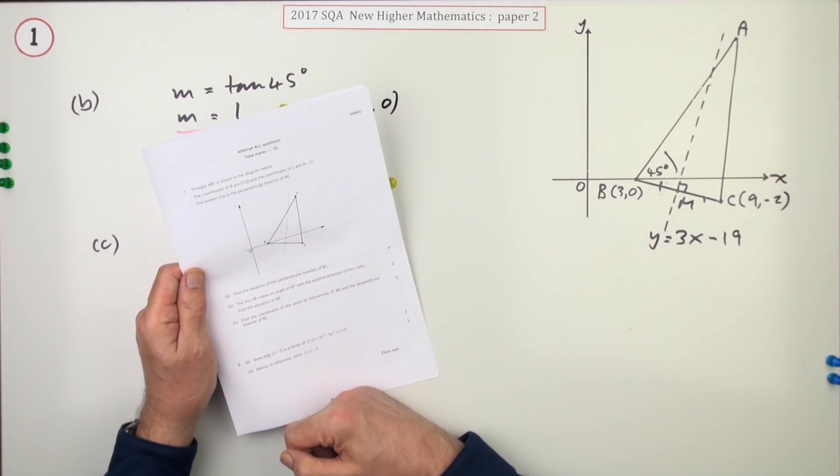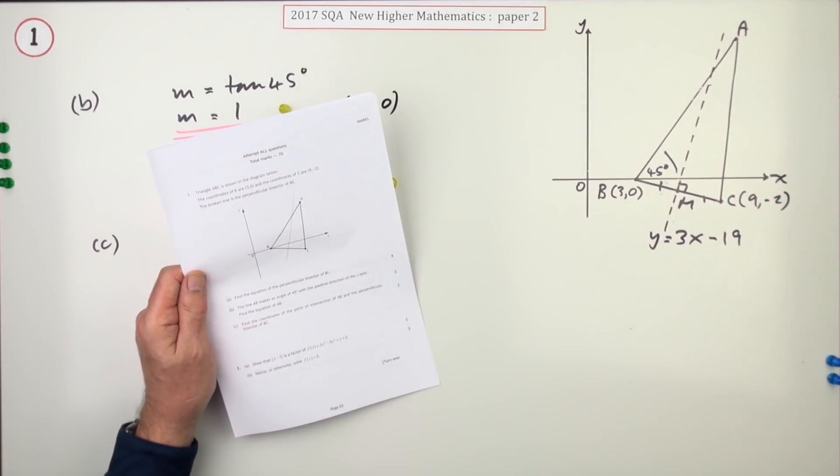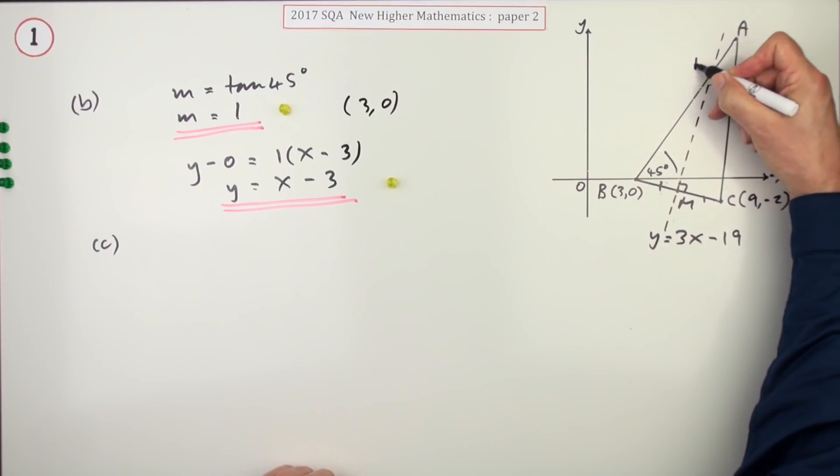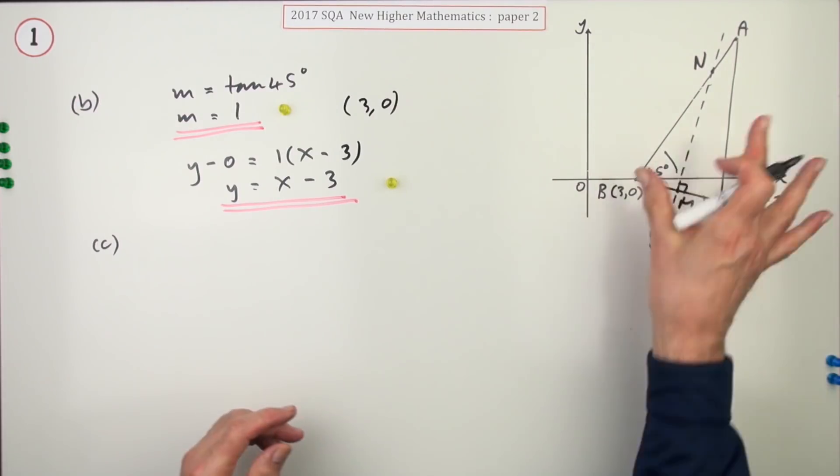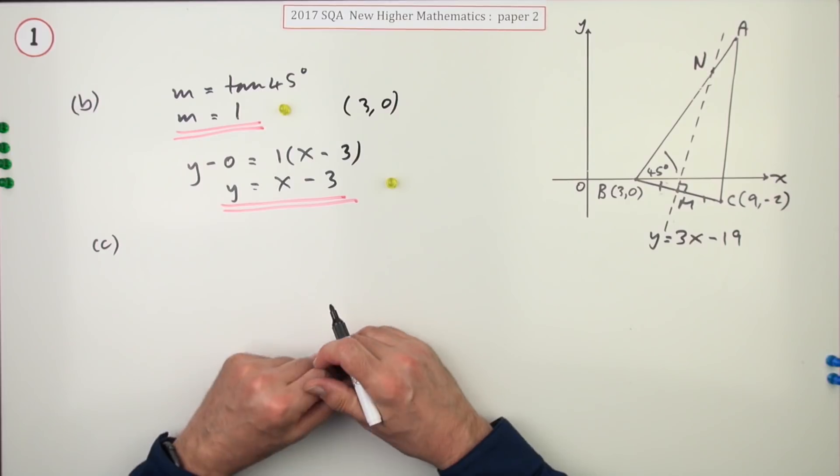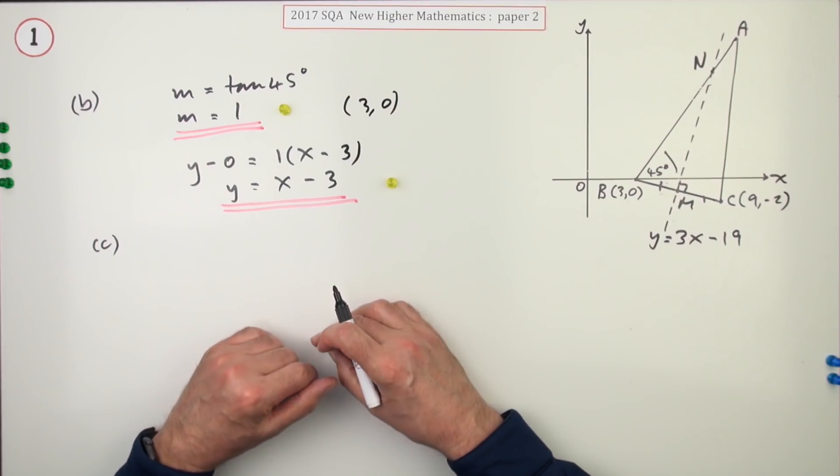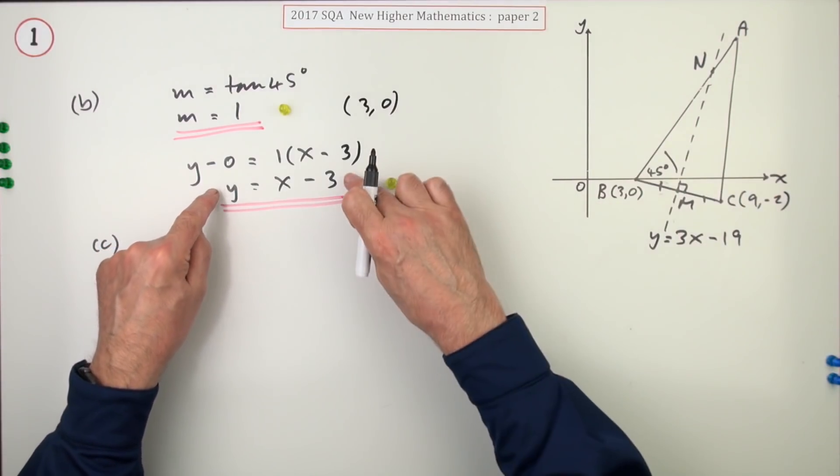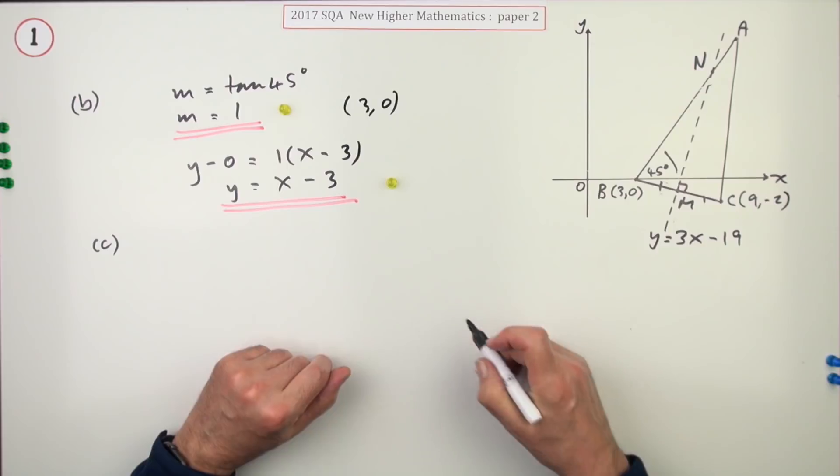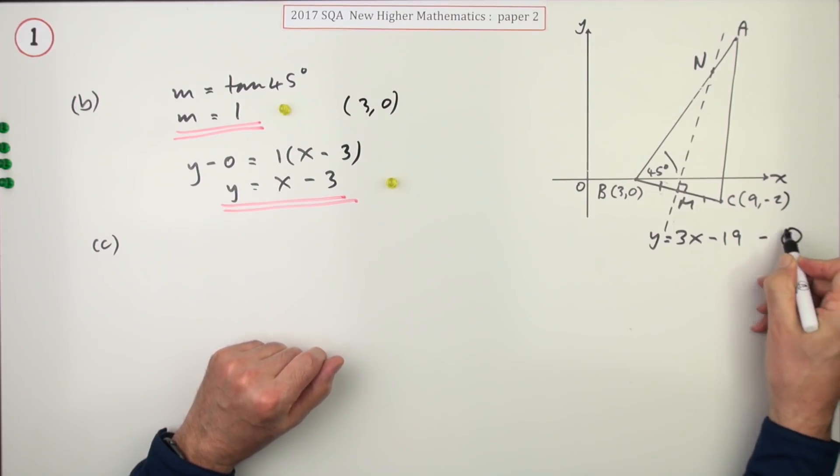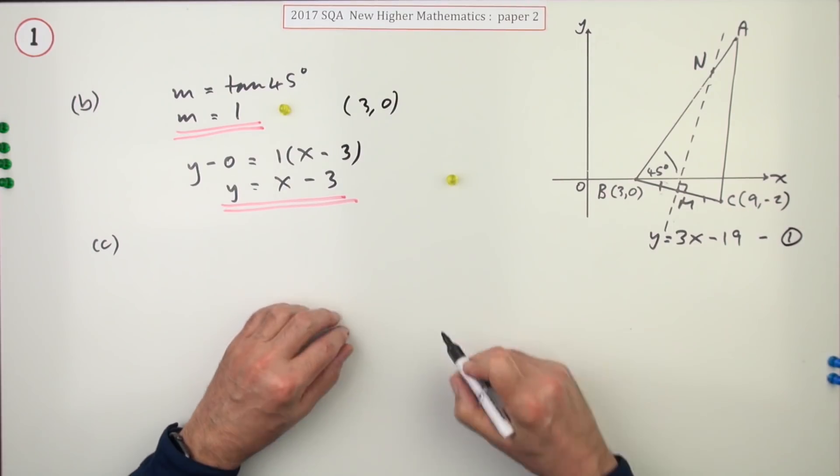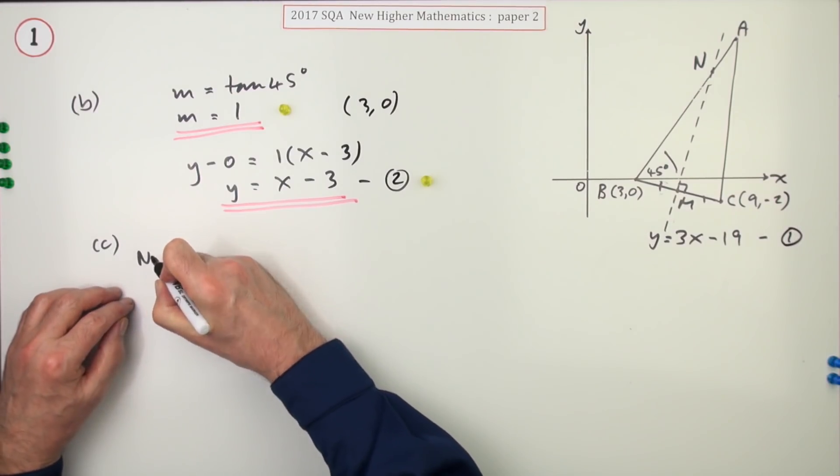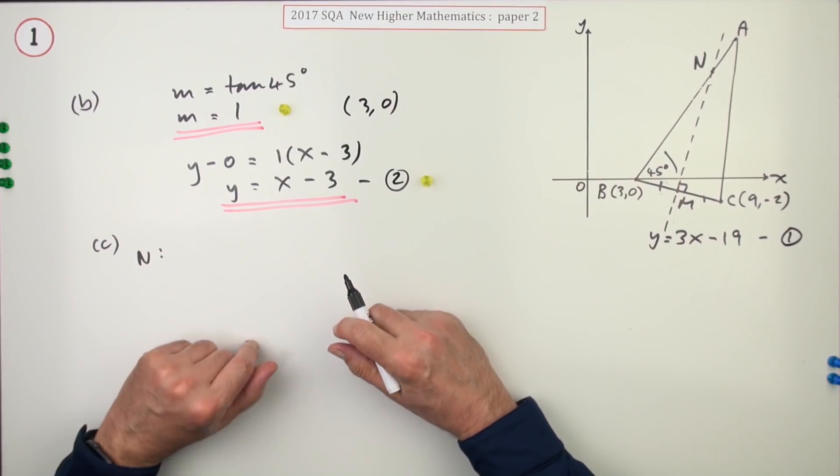Part C. Find the coordinates of the point of intersection of AB and that perpendicular bisector. Well, that's this point here, but we'll give it the name N in this diagram. That means, what's the point that satisfies this equation and that equation at the same time? Simultaneous equations. I really should have given them names. That was the first equation I derived. That was the second equation I derived. If I want the intersection, that means I'm going to substitute 1 in 2.